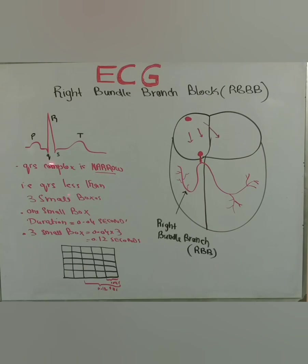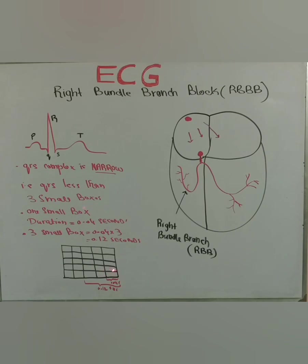We call it narrow because the duration of the QRS complex normally, when there is no blockage in either the right or left bundle branch or anywhere in the conduction system, and the impulse is from the SA node or from the upper level of the AV node (the junctional pacemaker), then the QRS complex will be less than three small boxes in duration. Since one small box is 0.04 seconds, three small boxes equal 0.12 seconds — so the normal QRS complex is less than 0.12 seconds.